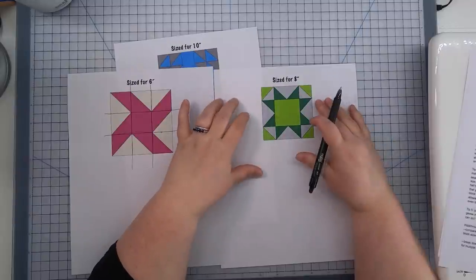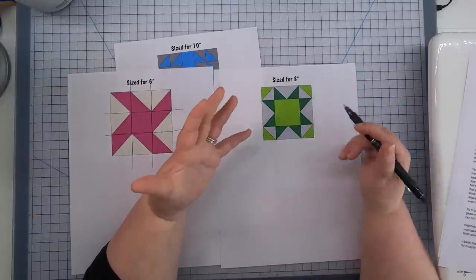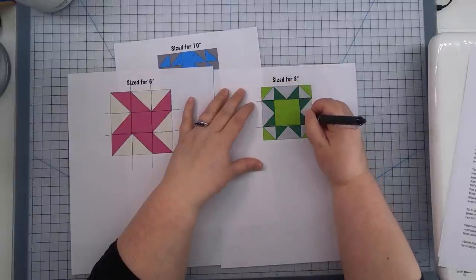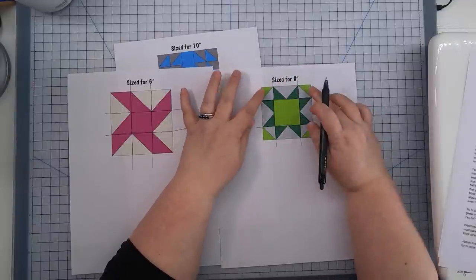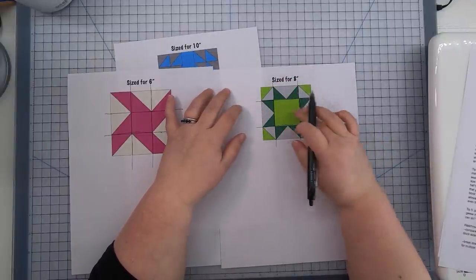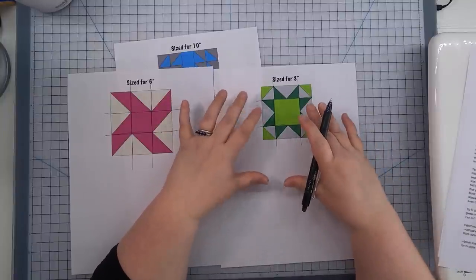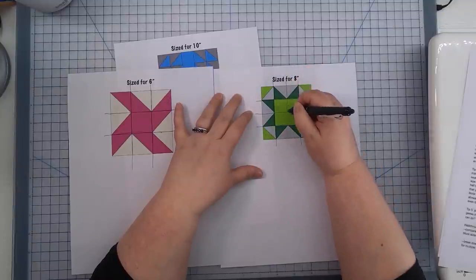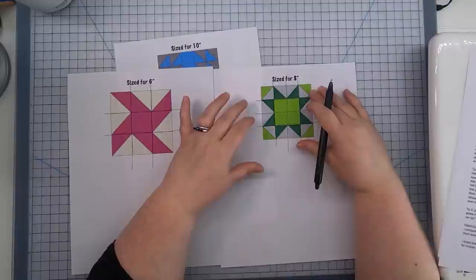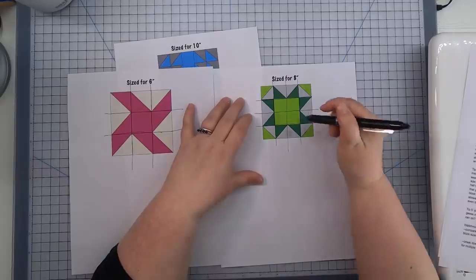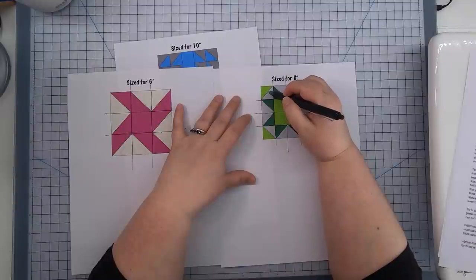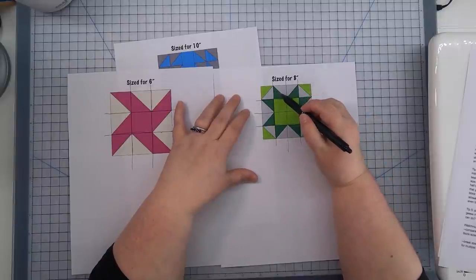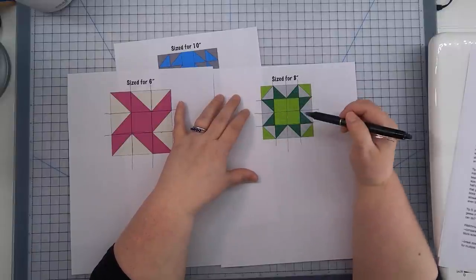Now the grid system of a block is always based on the smallest component of that block for 99% of the cases. So this is a three by three grid block and it's really obvious. Now if we were to draw on the seam lines of this block, it would seem like a three by three grid as well. This is how we would assemble this block, right? We would have our little corner pieces, we would have four flying geese in that center. But in reality, this is a four by four grid block. Because we want all of the squares in our grid, just like on graph paper, to be the same size.